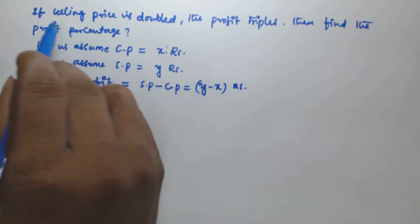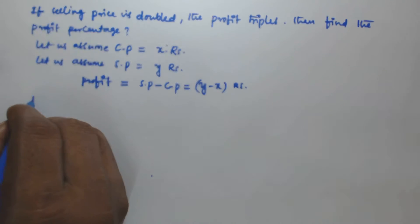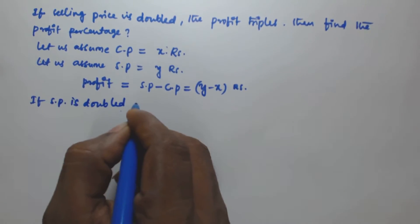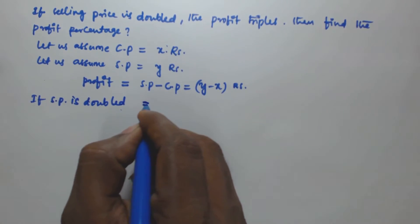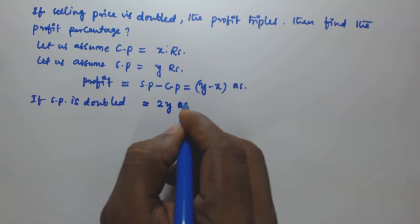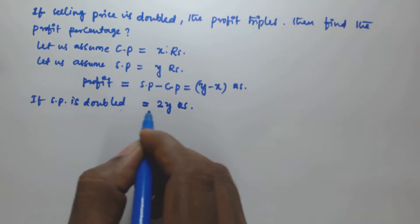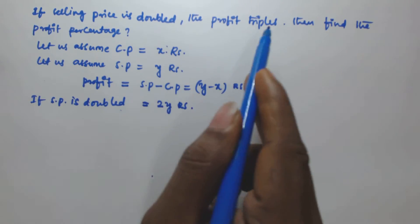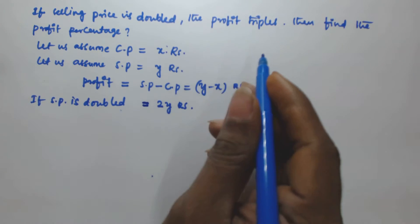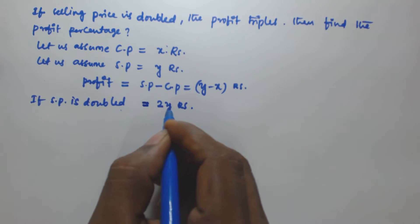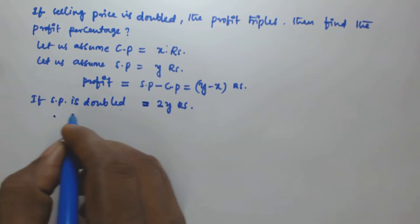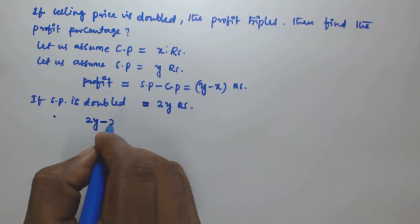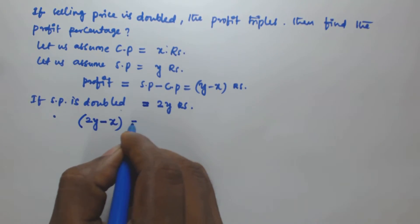It is given that if the selling price is doubled, the new selling price is going to be 2y rupees. The new profit is equal to new selling price minus cost price, that is 2y minus x.